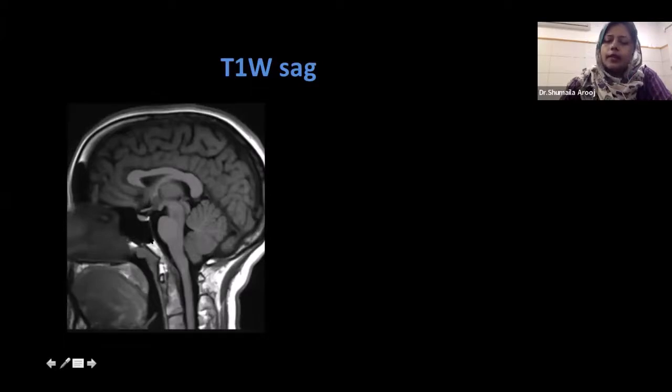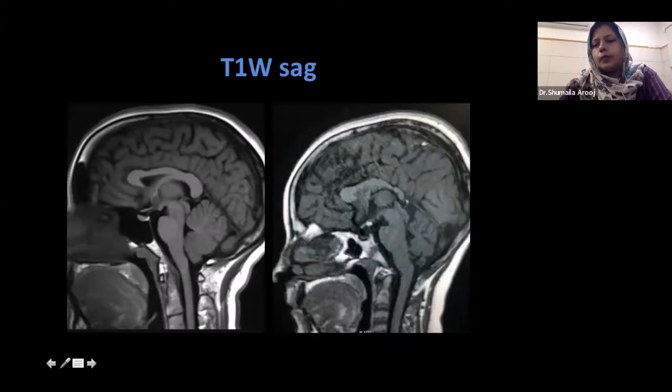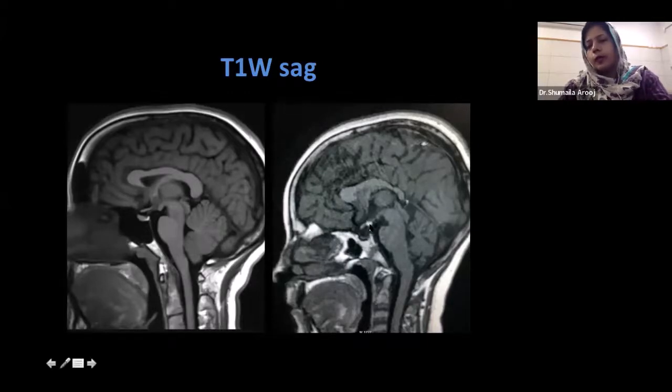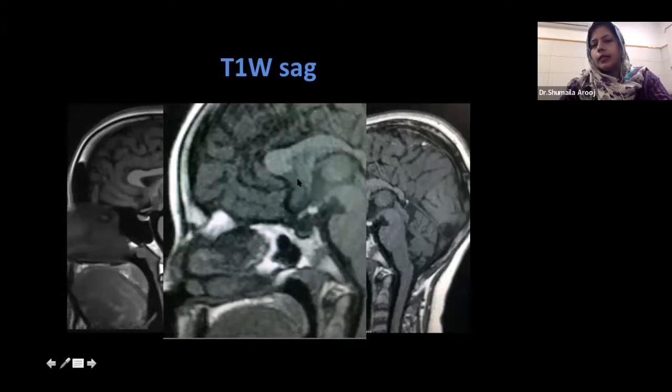We also perform T1-weighted sagittal images for the midline structures — for example, the brain stem and infratentorial structures are seen very well on sagittal images. Specifically, we do this for the pituitary, because on plain T1 you can appreciate the difference between the anterior and posterior pituitary. The posterior pituitary has a bright focus lying at its position. This was a 15-year-old girl who had all the symptoms of hypopituitarism. When we imaged her, we could see that the bright spot of the posterior pituitary was ectopic in location — there was a pituitary transection. The posterior pituitary was lying at an ectopic position in this patient who had all the symptoms of pan-hypopituitarism.